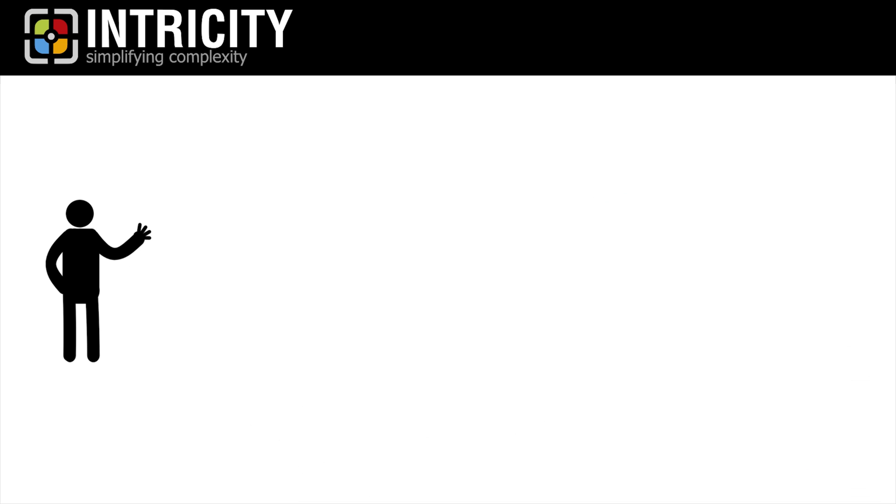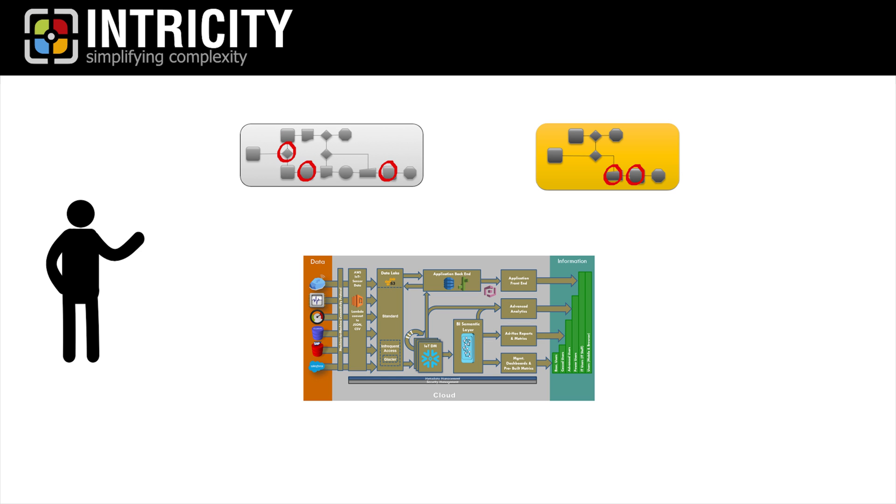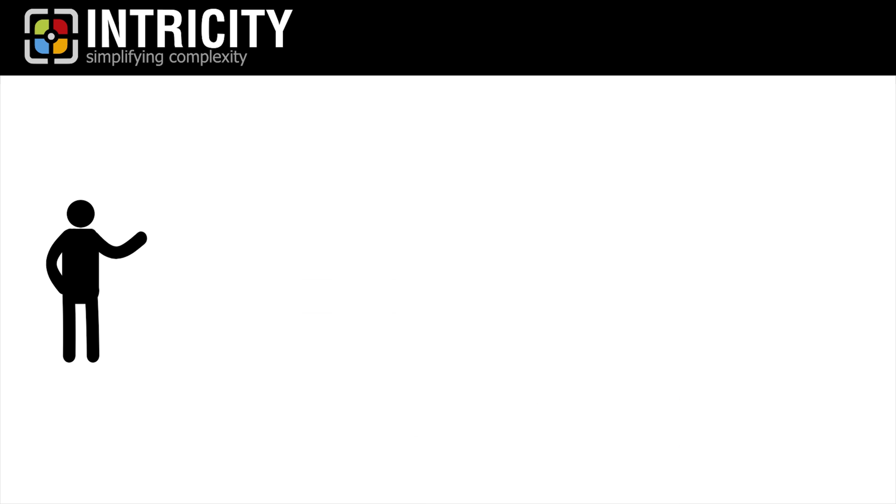Number four, be judicious about the legacy baggage you decide to include. In an IoT project, you're going to marry some of your old processes with new processes. However, don't forget that some of those old processes may be redundant as a result of deploying IoT. So you'll need a logical solution architecture that weighs the must-haves in your legacy processes to be successful.